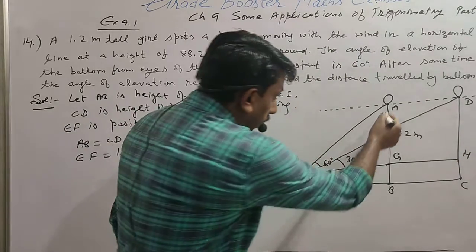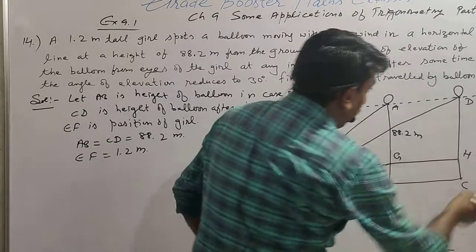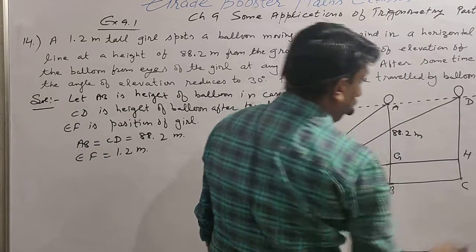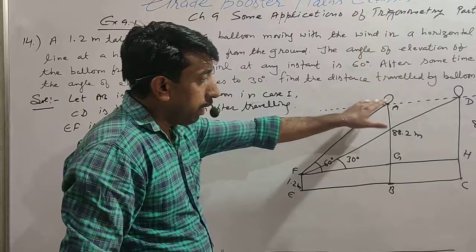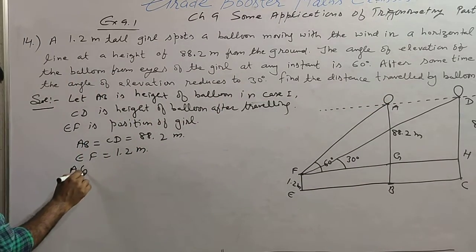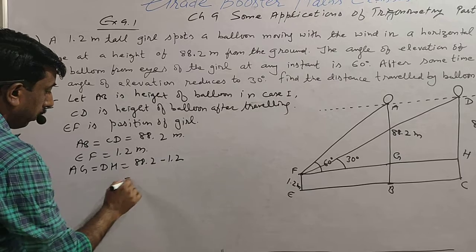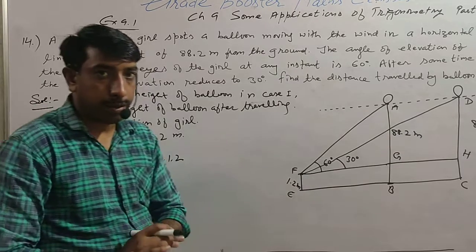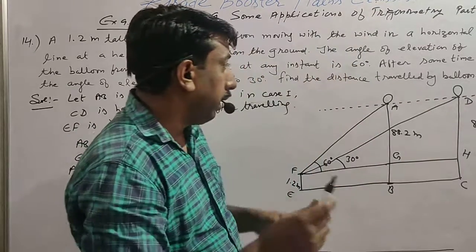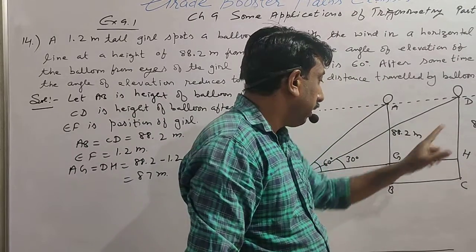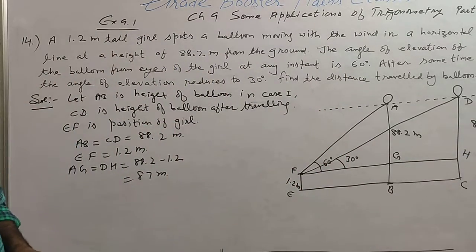We need triangles AGF and DHF. In these triangles, the effective height is reduced: AG equals DH equals 88.2 minus 1.2, which is 87 meters. The question asks how far the balloon travels — that is, from point A to D, i.e., we need to find GH.